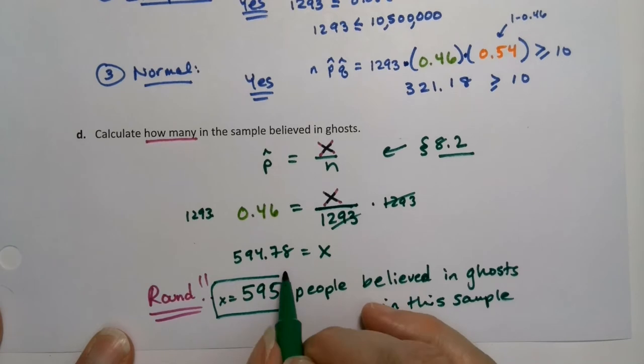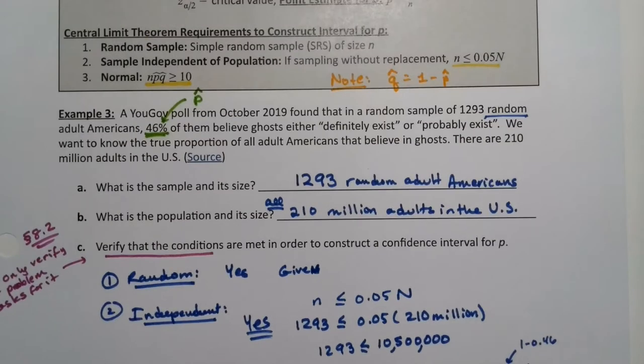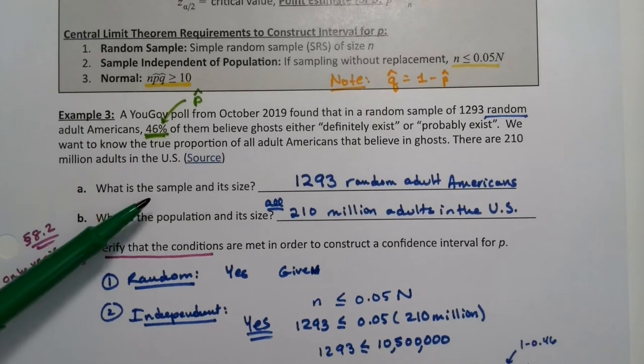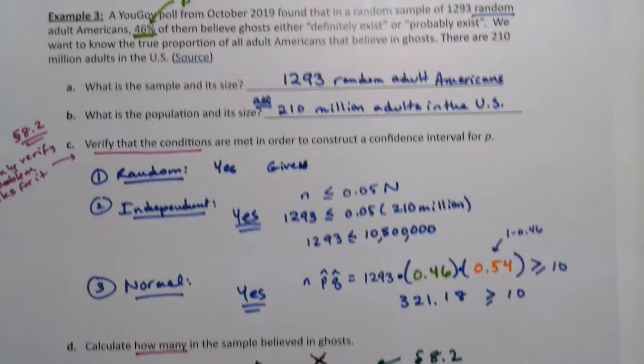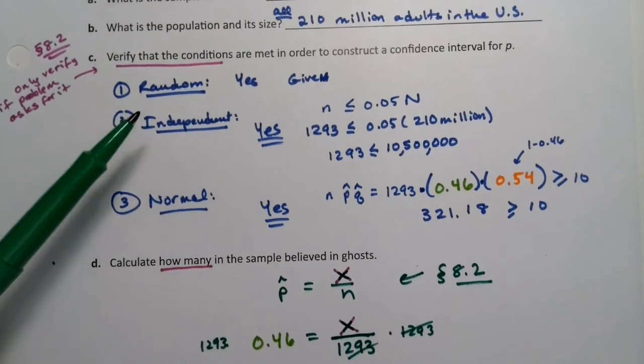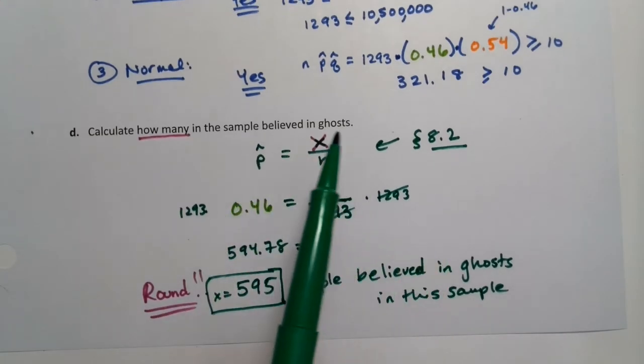That's a review question. As a matter of fact, this whole page so far is review questions. This right up here is a review from chapter one, sample population size. This is review of chapter eight, the random, independent, normal thing. And this is actually also review of chapter eight. We've done this before where you're solving for X.